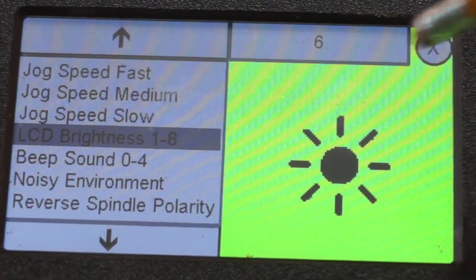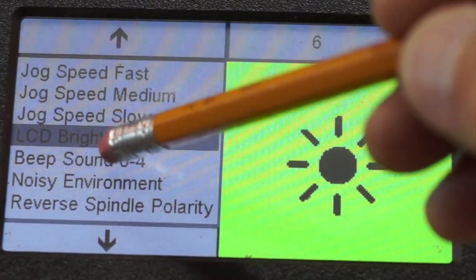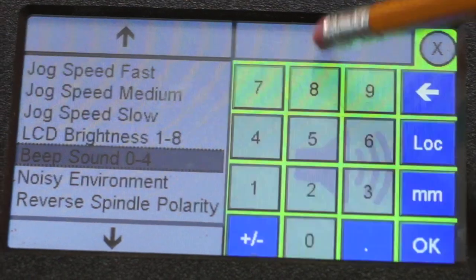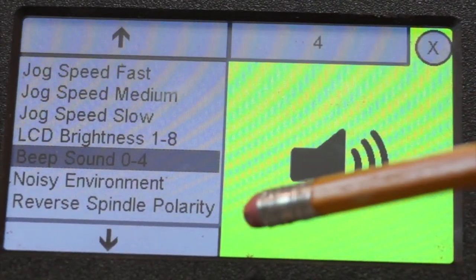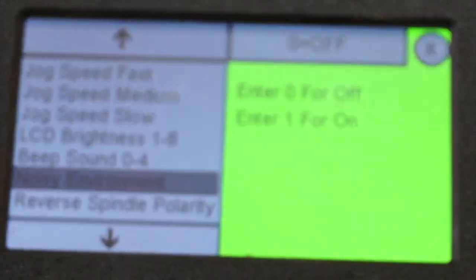So that's something I can also change. The sound, the beep sound, is on 2. I'm going to change that to a 4. Because it's noisy when I'm using this thing. For a noisy environment.